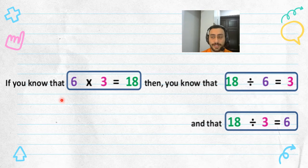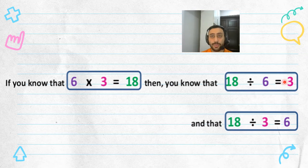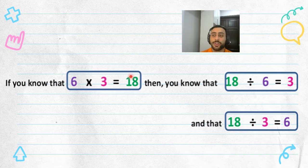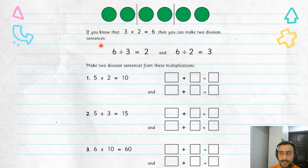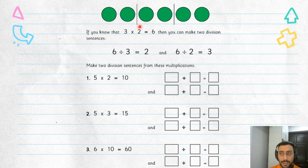Let's look at another example. If you know that six times three equals 18, that means you know that 18 divided by six equals three, and also 18 divided by three equals six. Easy. So you know the answers to two different divisions if you know only one multiplication. So if you know three times two equals six, then you can make two division sentences: six divided by three equals two, or six divided by two equals three.